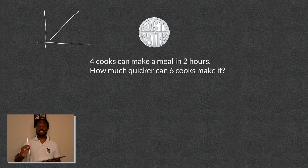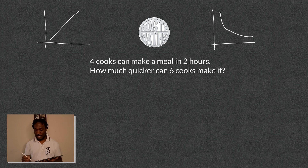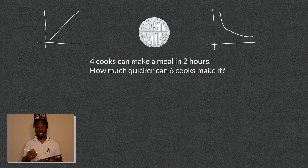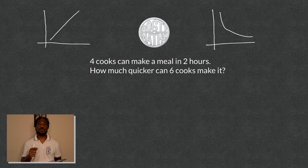Inverse proportion does the opposite of that. The inverse proportion graph will tend to look something like a curve going down — it could be a straight line going down as well. The way that works is: the more people you have for something, the less time it will take to do. So that's what inverse proportion is all about.